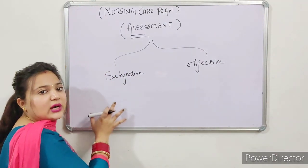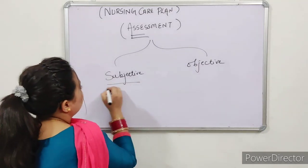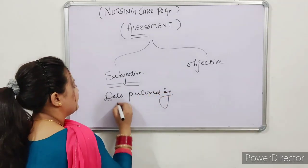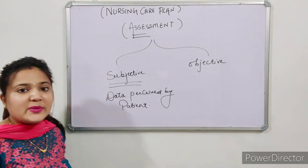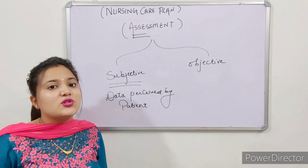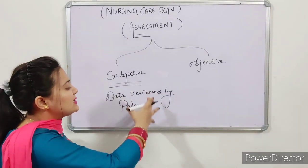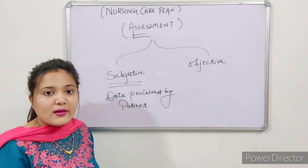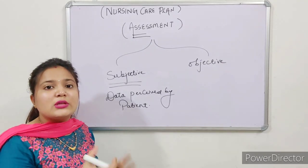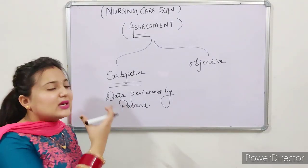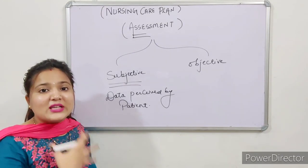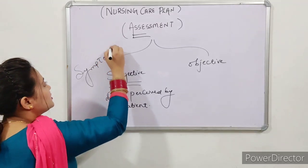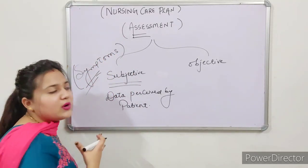Subjective data is the data perceived by the patient. When the client comes to us, they do not use clinical words or clinical terms — that is the data we perceive from the client. For example, if the client has breathing difficulty, they will not say 'dyspnea' — dyspnea is a clinical sign that nurses or doctors observe. The client will say 'I am feeling breathless.' These words — called symptoms — are what the client tells us.